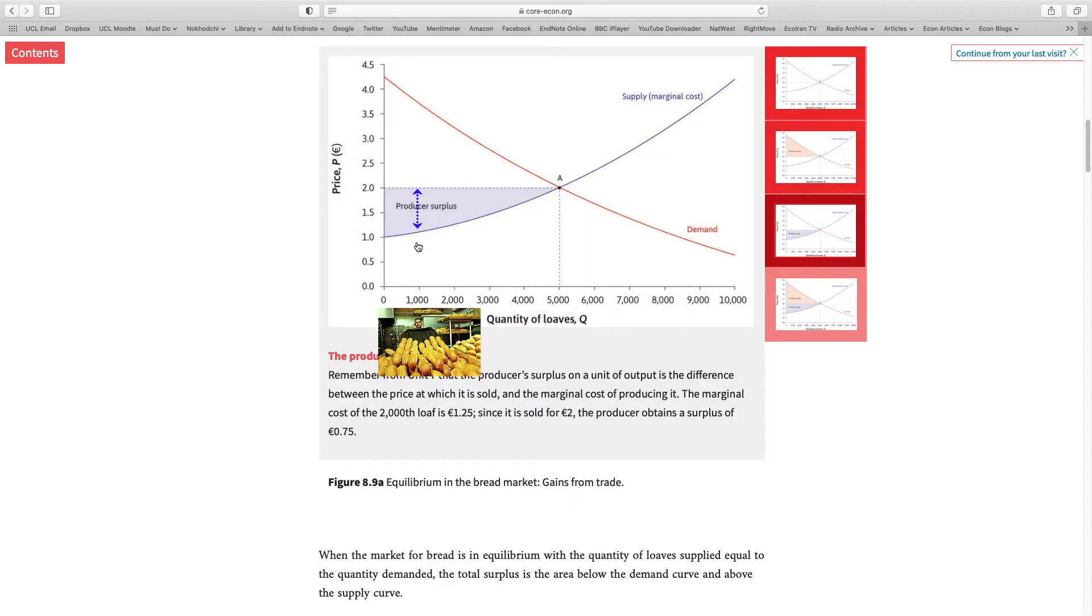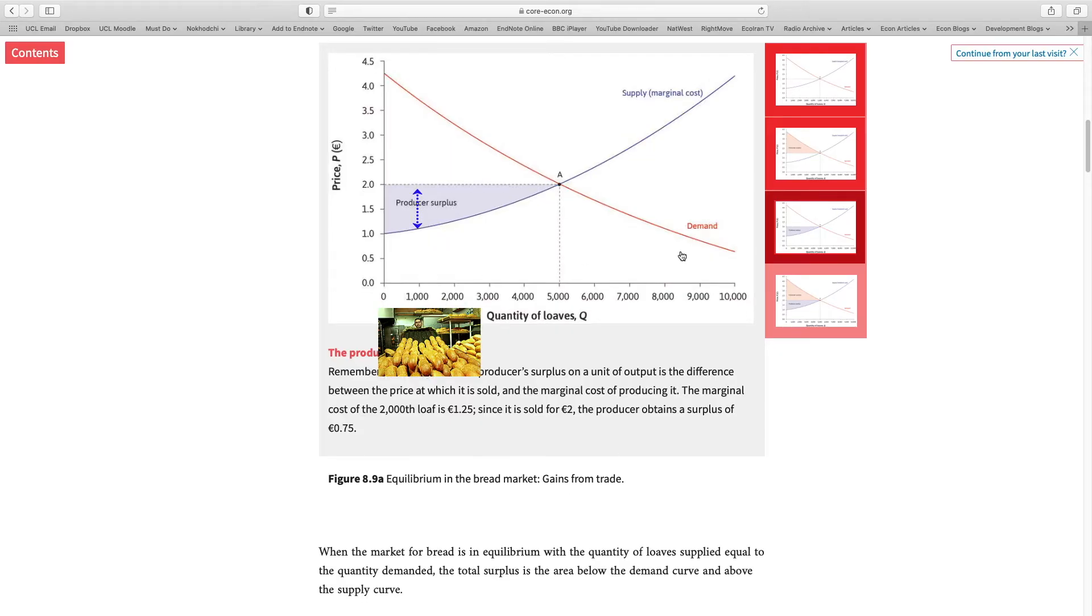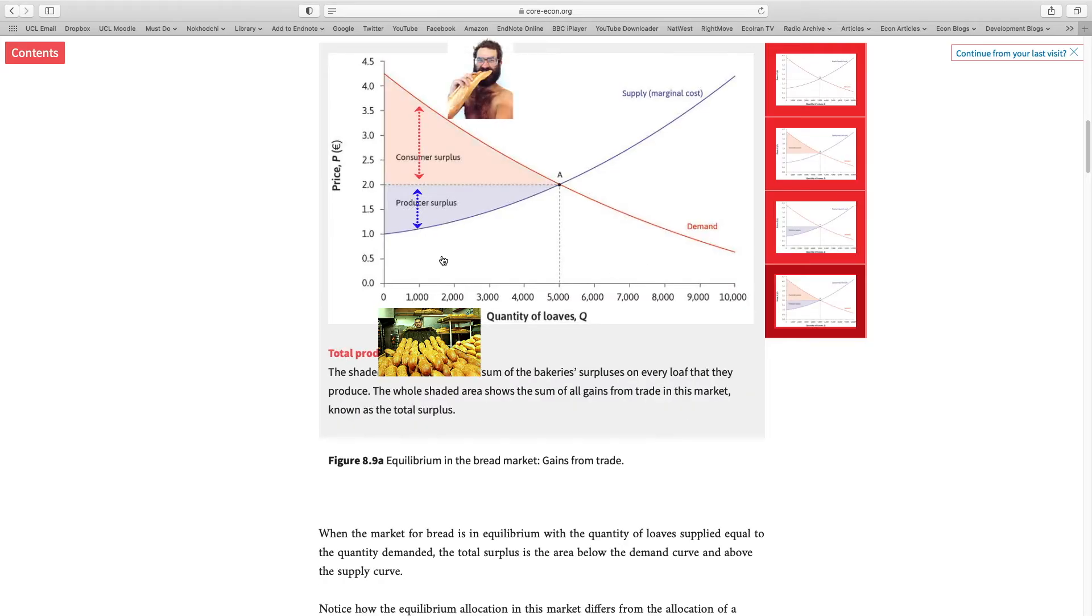So just to repeat, that baker is selling the bread at a much higher price than he was willing to supply it for. And that difference is producer surplus, a benefit going to the baker. So if we put these two sides together, we realize that when the baker was selling the 1,000th loaf of bread and the customer was buying it, they both benefited from the transaction. There was surplus going to the consumer and surplus going to the producer.